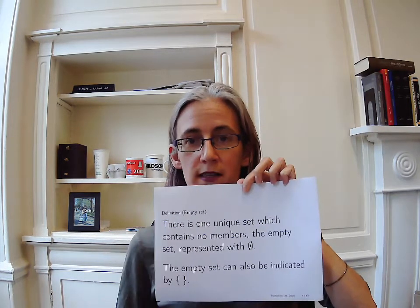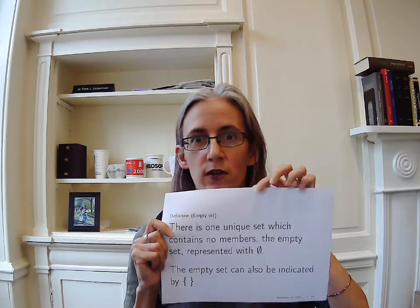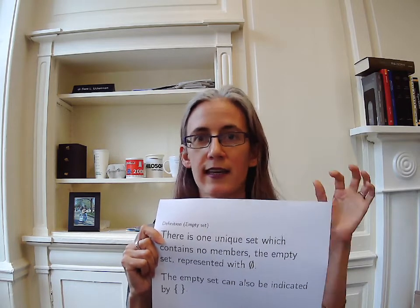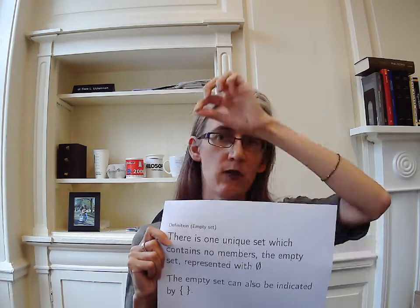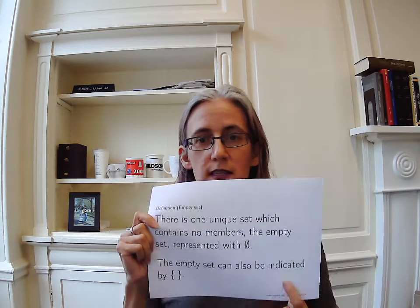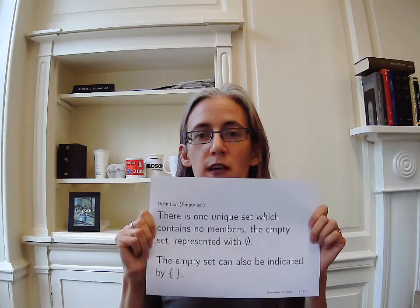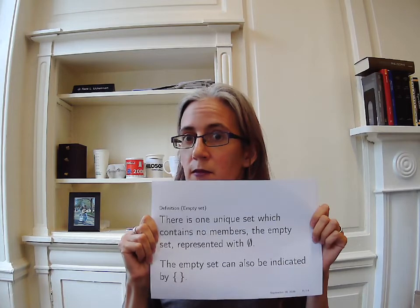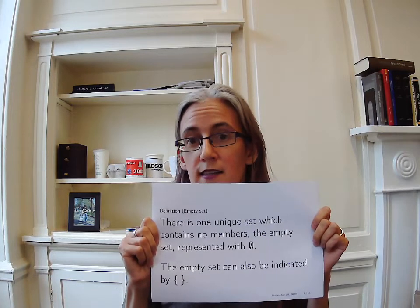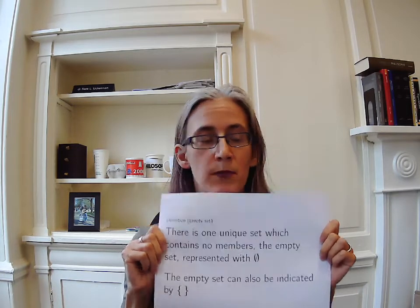There are two different ways that the empty set can be represented. One is with this zero that has a slash through it — so nothing, null. But we also will sometimes want to indicate sets by writing down all of their members in a list between these curly brackets. So if you've got two curly brackets with nothing in between them, then that is the set that doesn't have any members.